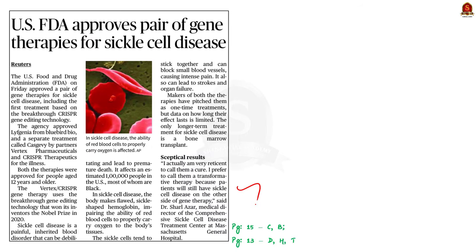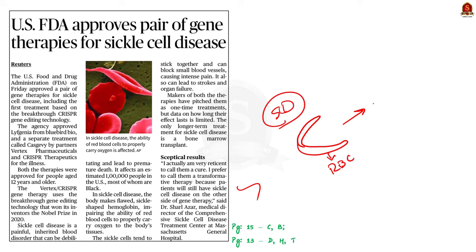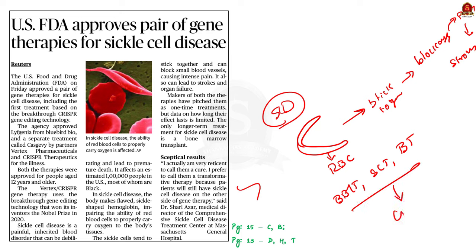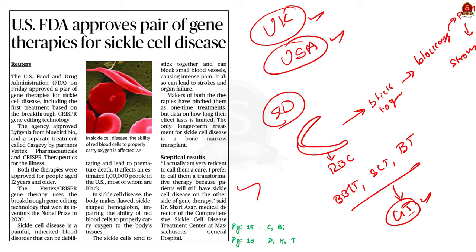Look at this news article. Yesterday, the USA approved a pair of gene therapies for sickle cell disease. Sickle cell disease is an inherited blood disorder in which the body makes sickle-shaped red blood cells that tend to stick together and can block small blood vessels, causing intense pain, stroke, and organ failure. So far, treatment has included bone marrow transplant, stem cell transplantation, and blood transfusion. The UK was the first country to approve gene therapy for sickle cell disease, and now the United States has followed.